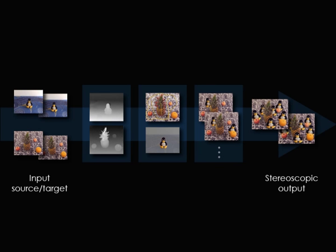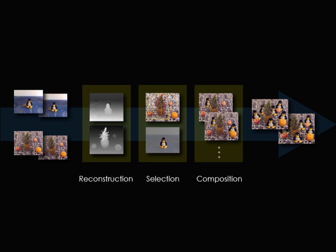Here we show the editing workflow for 3D copy and paste. Input to the system are stereoscopic pairs of images for the source and target, and the output is a composited stereo pair of images. The workflow consists of three stages. Depth stream construction is performed offline prior to editing. We will next demonstrate the selection and composition stages.